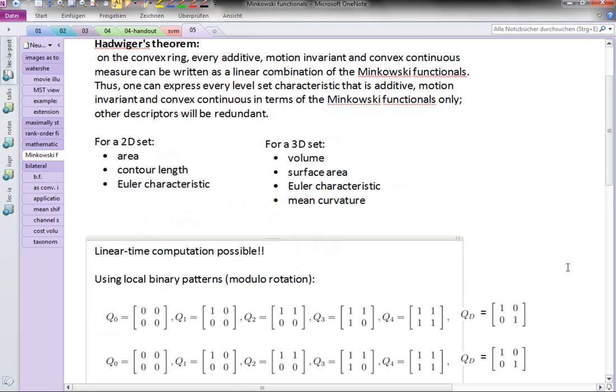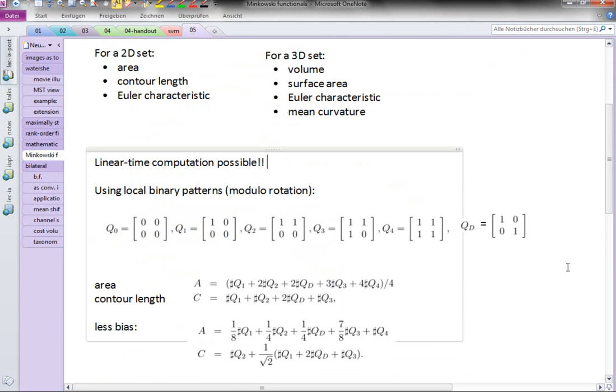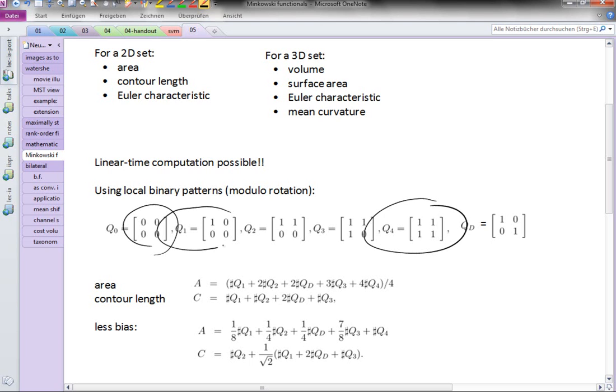But there's a different way, namely using those local binary patterns. You partition your image into an overlapping set of patches of size 2x2, and you then compute histograms. How often in your binary image does it happen that all four adjacent pixels are 0 or all are 1? How many patches do you find in which just the top left or top right or bottom left or bottom right pixel is on and all others are 0, and so on.